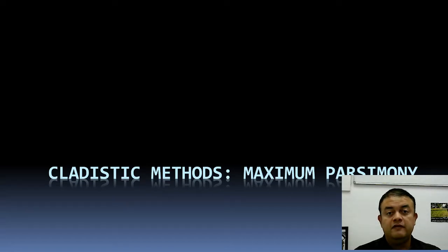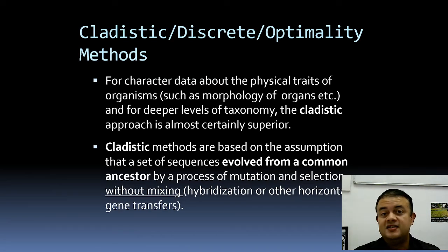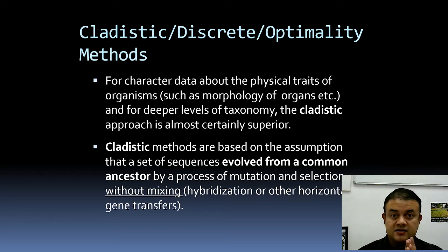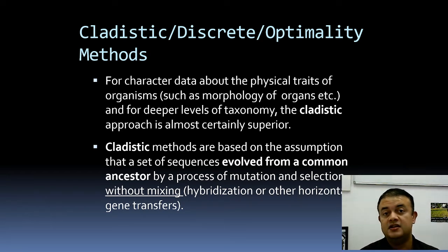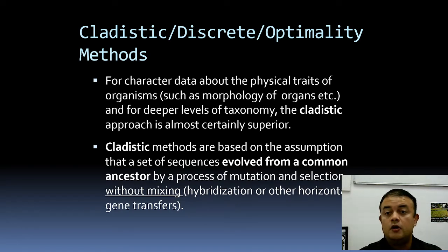We will introduce the method called maximum parsimony in this lecture. The cladistic method was already introduced — it can be contrasted with the distance-based approaches in systematics or phylogenetic reconstruction methods. Cladistic, discrete, or optimality methods look at individual variation.